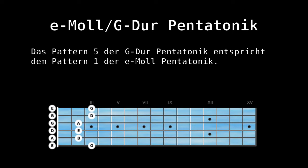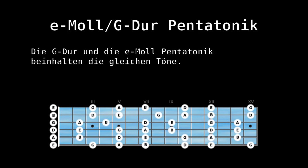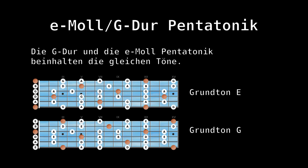Die G-Dur Pentatonik, Pattern 5, ist das Pattern 1 der E-Moll Pentatonik. Die G-Dur und die E-Moll Pentatonik haben dieselben Töne.